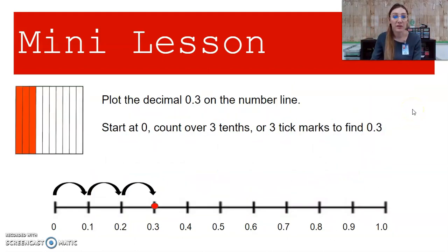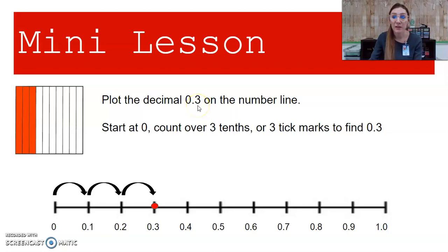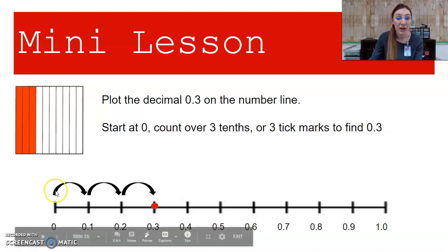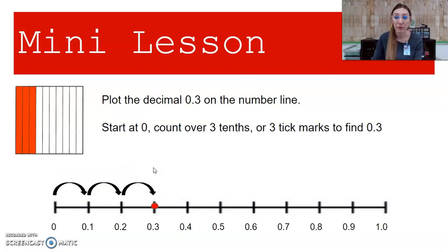Let's do an example — let's plot three-tenths on the number line. We want to start at zero and count over three-tenths, or three tick marks, to find three-tenths. Knowing your decimal place values is very important. I know that the digit three is in the tenths place and I don't have anything in the hundredths place. So when plotting on my number line, I want to make sure I'm looking at tenths, not hundredths. I'm going to start at zero, notice my number line is counting in tenths, then count over three times: one, two, three — and plot my point right there on three-tenths.